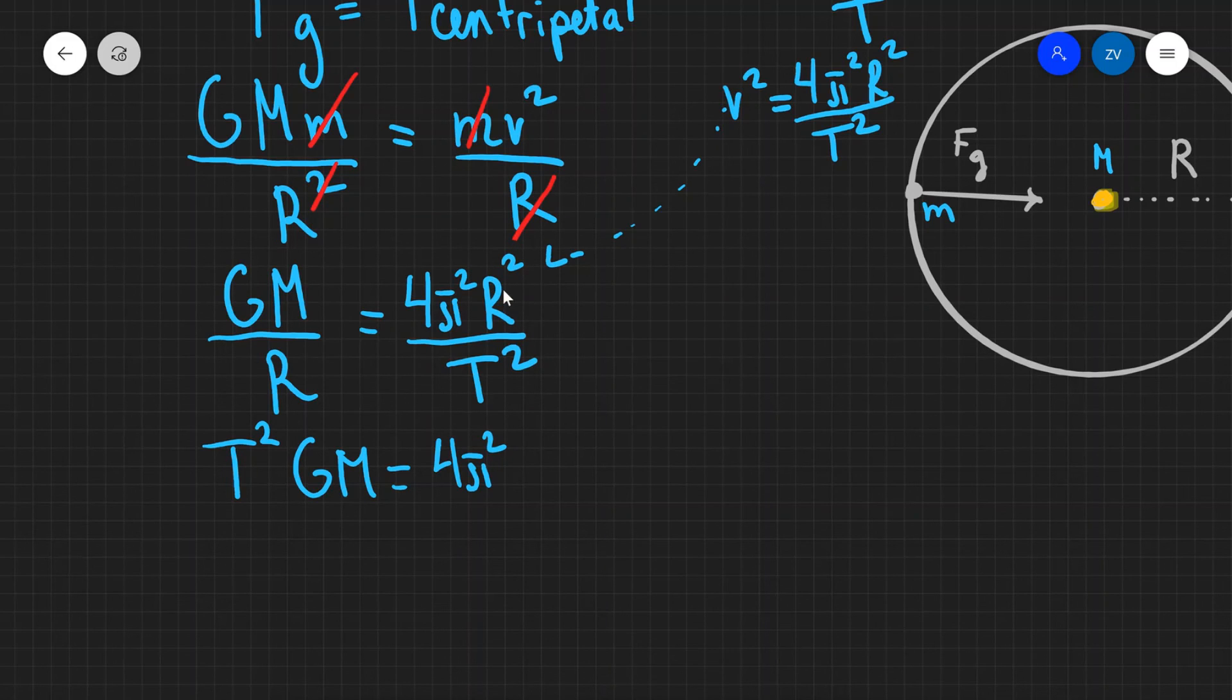Or if you think about it in algebraic terms I'm going to multiply both sides by r, which is going to give me r cubed on this side.